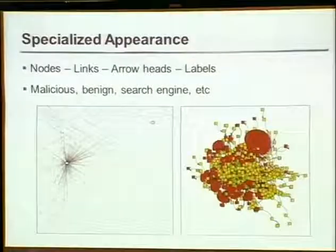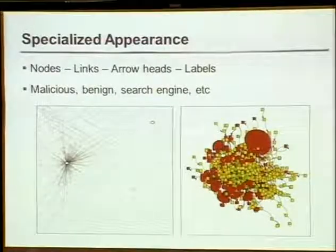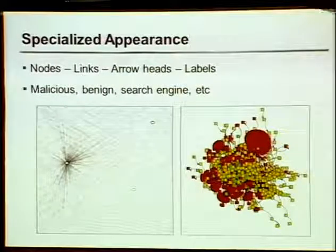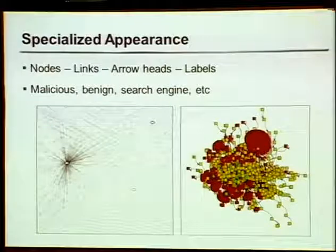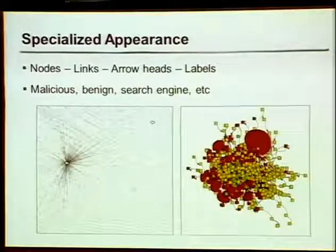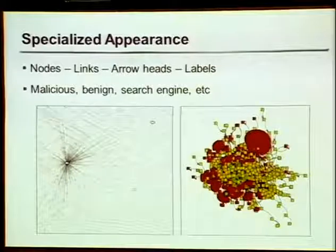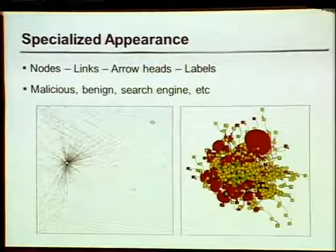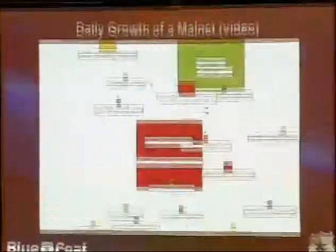We really needed specialized appearance for all parts of the graph. Off-the-shelf software would give you one thing, but on the right is our custom version. If we made the nodes — the domain markers — just show up too big, we end up with just a soup. So we fully customized the appearance of the nodes, the links, the arrowheads, the labels, and do it fully dynamically based on how big is the MalNet and what kind of content is there. I'll now turn the time over to Tim.